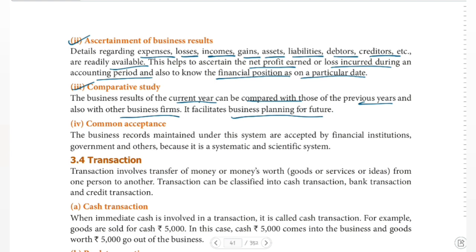You can also compare your company's results with other companies. The last advantage is common acceptance. The business records maintained under this system are accepted by financial institutions, government, and others because it is a systematic and scientific system.